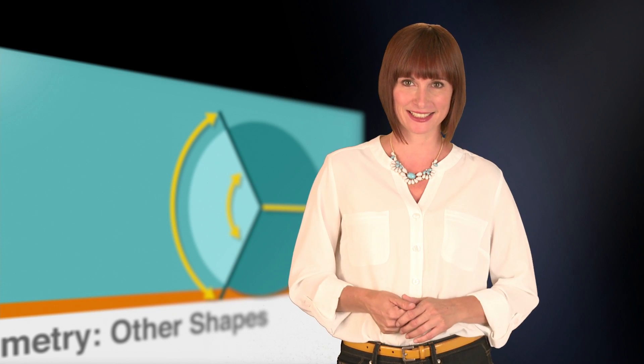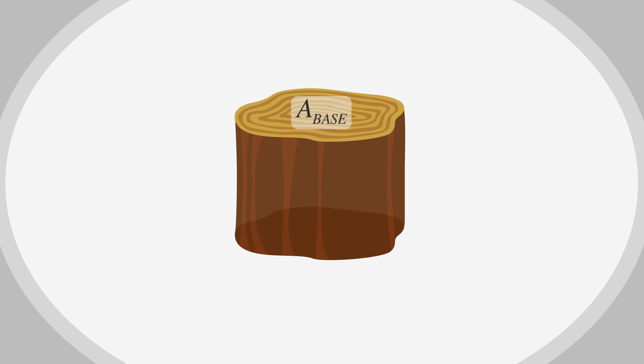Let's start with the basics. For any three-dimensional shape with congruent bases and a uniform height that's perpendicular to both of the bases, regardless of the shape of the base, the volume is the area of the base times the height.